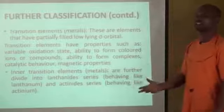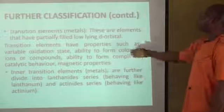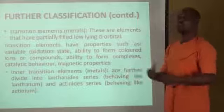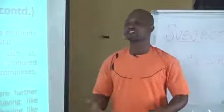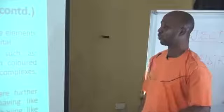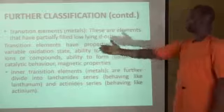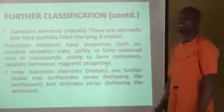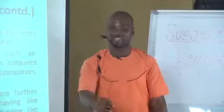Transition elements have special characteristics like variable oxidation state — for instance, copper and iron can exist as iron 2 and iron 3. They have the ability to form colored compounds; most compounds of transition elements are colored. For instance, copper(II) tetraoxosulfate(VI) is blue in color, and iron(III) tetraoxosulfate(VI) is brownish in color. They also have other properties like the ability to form complexes, catalytic behavior, and magnetic properties including diamagnetism and paramagnetism.